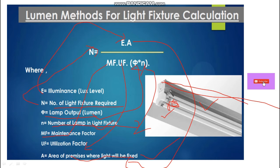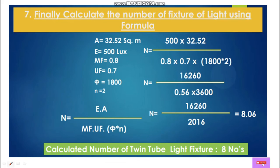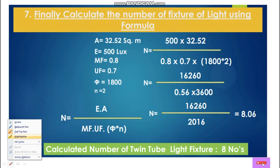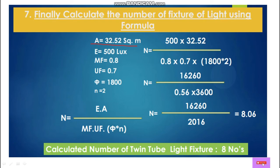A means the area of the premises where the light will be fixed — in our case the classroom. Now we have already taken values for all parameters: area is 32.52 square meters, lux level is 500 for classroom, maintenance factor is 0.8, utilization factor UF is 0.7, lumen Φ is 1800 from the light catalogue, and small n is 2.